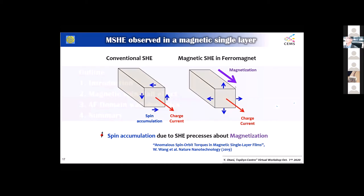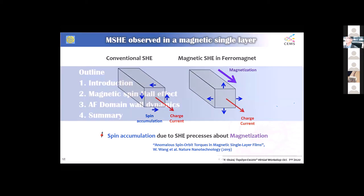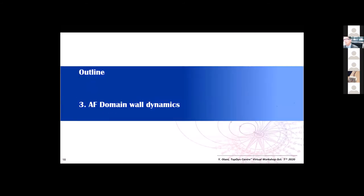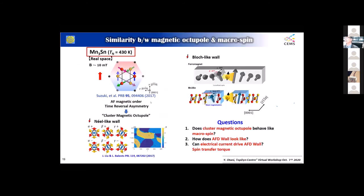Now I'd like to move to antiferromagnetic domain wall dynamics. As I said at the very beginning, this material has a Kagome lattice, and the manganese moment is placed on top of it. Typically it shows a frustrated-type structure, one of which can be classified as the cluster magnetic octopole. This analysis was given by Professor Suzuki and co-workers in 2017.